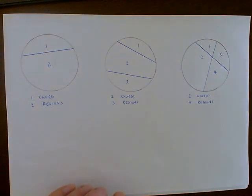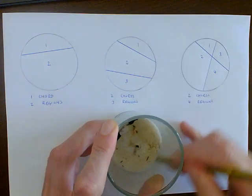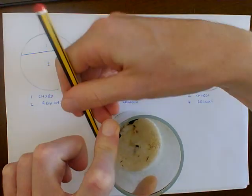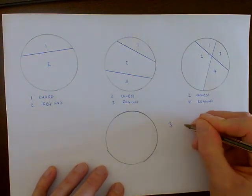So you will need a compass. If you don't have a compass, anything circular—I've got an old candle here you could draw around like so—is to work out the maximum number of regions you can get with three chords.